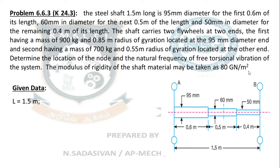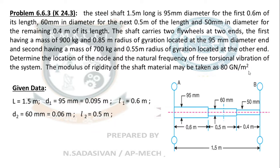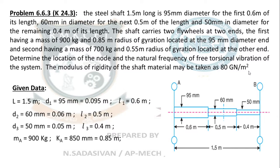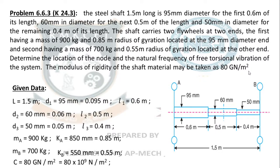Write down the given data. Total length is 1.5 meters. Diameter D1 = 95 mm, length L1 = 0.6 m. Diameter D2 = 60 mm, length L2 = 0.5 m. Diameter D3 = 50 mm, length L3 = 0.4 m. Mass of flywheel A is 900 kg. Modulus of rigidity G = 80 GN/m².